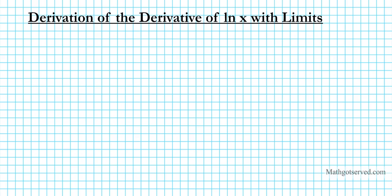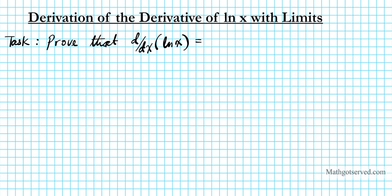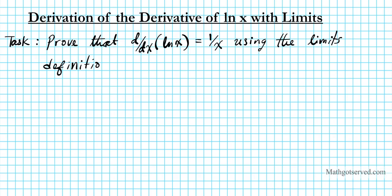Today we are going over how to derive the derivative of natural logarithm of x using limits. The task is to prove that the derivative of the natural log of x — d/dx of ln(x) — equals 1 over x, using the limit definition of the derivative.